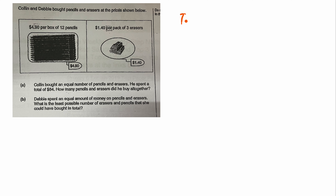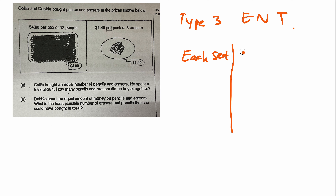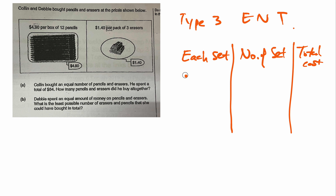This is Type 3 ENT. This is 'each set,' this is 'number of set,' and this is the 'total cost.' So the key word in this question is 'set.'